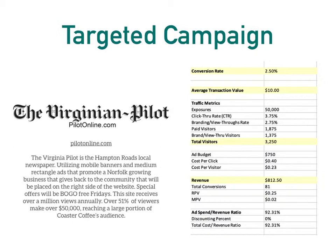For the targeted campaign, we want to use the Virginia Pilot, which is a local Hampton Roads newspaper. We will utilize mobile banners and medium rectangle ads that promote a Norfolk growing business that gives back to the community, placed on the right side of the website. Special offers will be the buy one, get one free Fridays promotion. This site receives over a million views annually and over 51% of viewers make over $50,000, reaching a large portion of Coaster Coffee's audience. The conversion rate goal is 2.5% with 50,000 exposures.